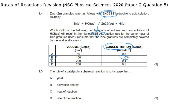Question 1.5 asks for the role of a catalyst in a chemical reaction. A catalyst does not increase the rate of the forward reaction more than the reverse. It does not change the heat of the reaction, and it actually decreases the activation energy. The only thing a catalyst increases is the overall rate of reaction, so the correct answer to 1.5 is option D.